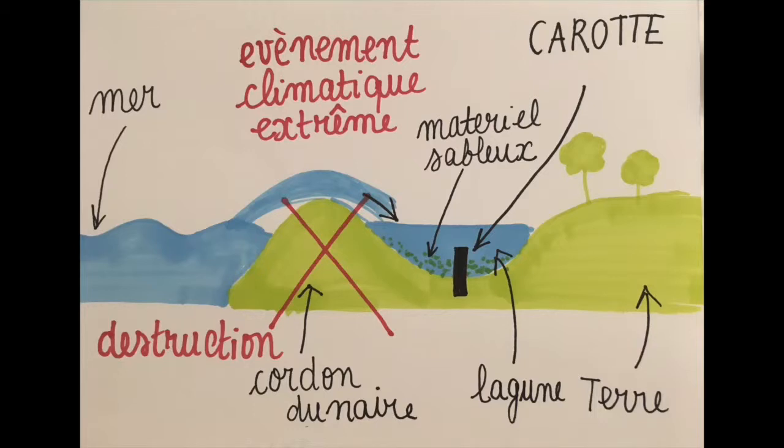Tous les sédiments qui constituaient le cordon dunaire se retrouvent donc piégés dans la lagune, causant une modification des conditions de sédimentation. Ce sont ces traces que les chercheurs traquent.